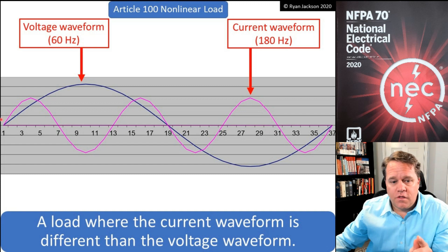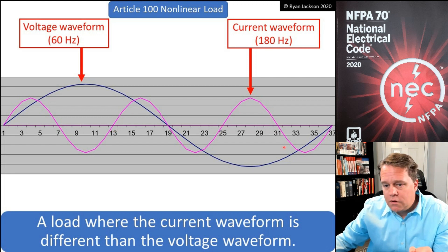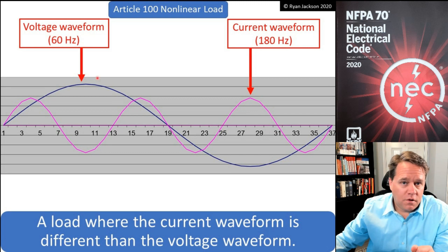If we count how many cycles this current has compared to the voltage waveform, we can see that it starts at a zero crossing, peak, zero crossing, negative peak, zero crossing, and it does that...